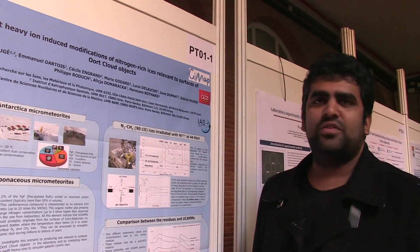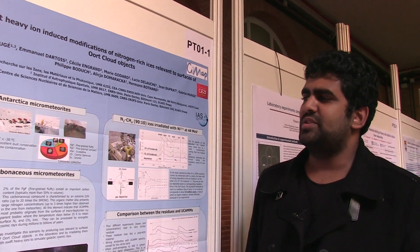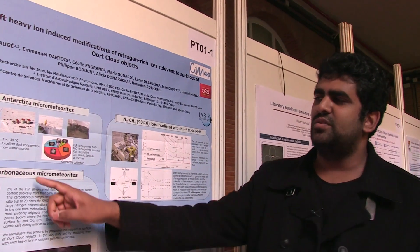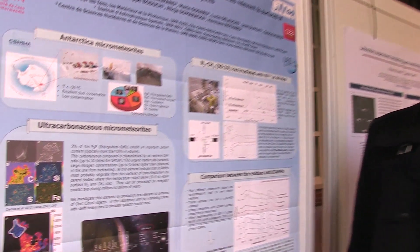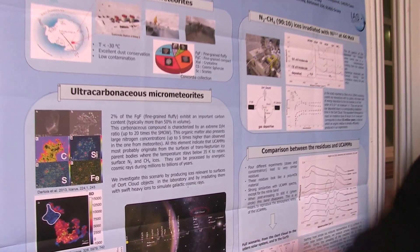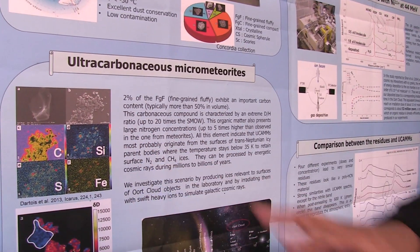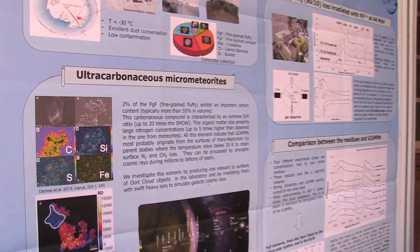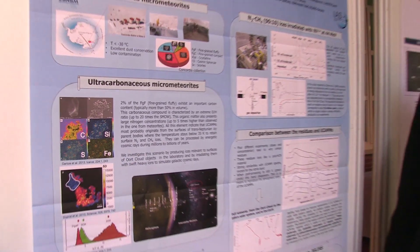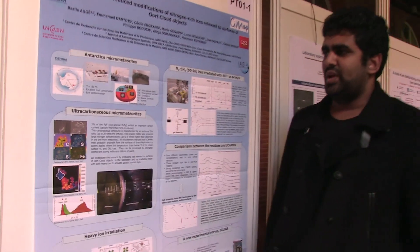When they did that, they discovered a full new family of micrometeorites known as ultra-carbonaceous micrometeorites. As you can see with this map here, it's basically just carbon. We have to understand how this matter has been formed because it's very rare.